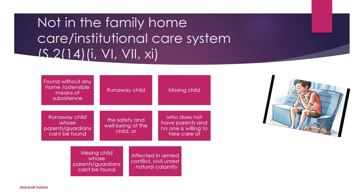Another category includes those children who do not have parents and no one is willing to take care of them — commonly known as orphans. In several cases, parents may be dead, or one parent is dead and the other has abandoned the child in someone else's care, but even that person has neglected or abandoned the child. This child is growing up in a bad environment, without a proper home, living off the streets. These children can also be considered as children in need of care and protection.